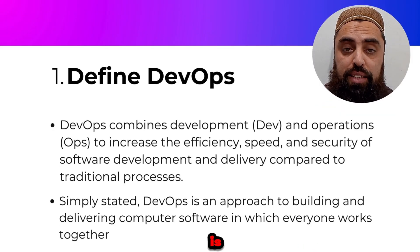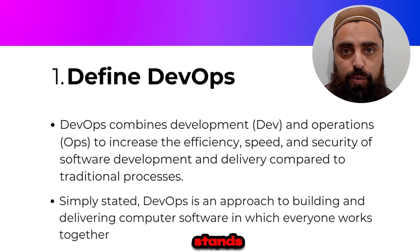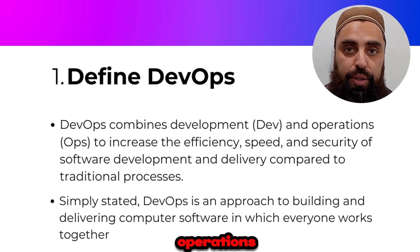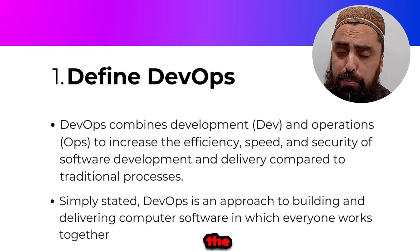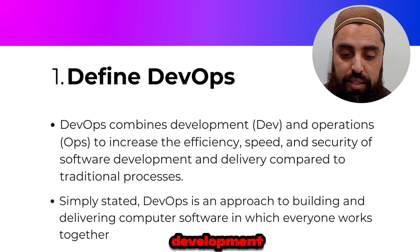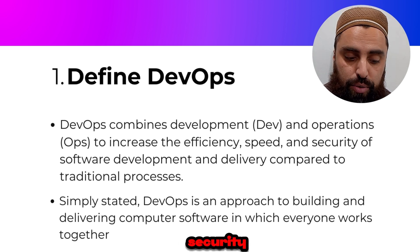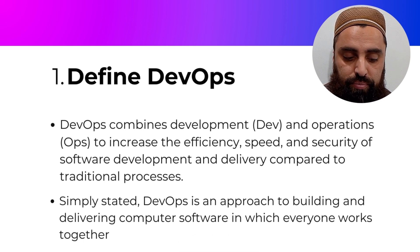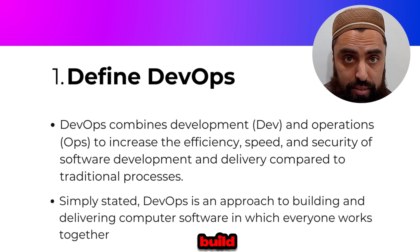DevOps is a combination of two terms: Dev, which stands for development, and Ops, which stands for operations. Development and operations are combined to create DevOps. The simple definition is: DevOps combines development and operations to increase the efficiency, speed, and security of software development and delivery compared to traditional processes.